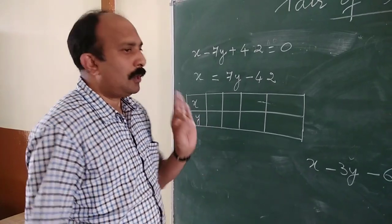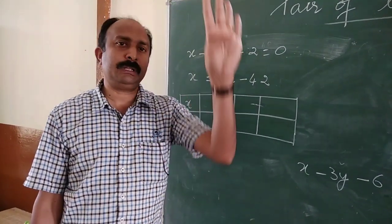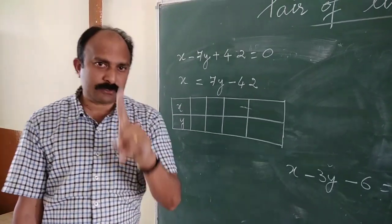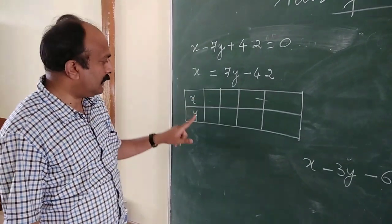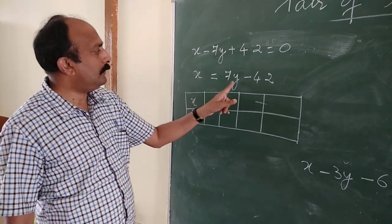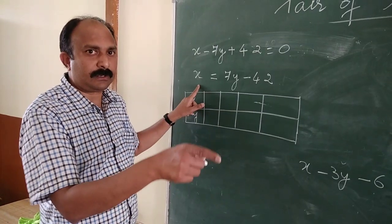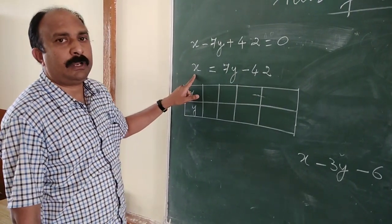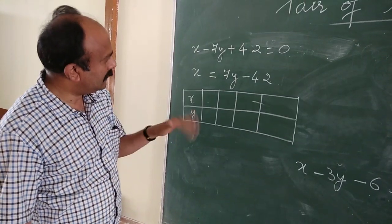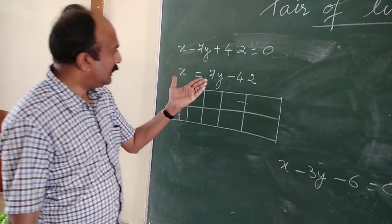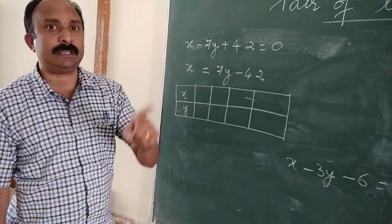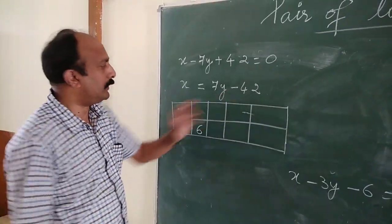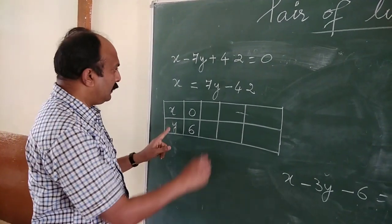To draw the graph, we find sets of solutions. I suggest always finding four sets of solutions. While making the table, always put x above and y below. Since I've rewritten the equation as x equals 7y minus 42, let us put values of y. Taking y equals 6: x equals 42 minus 42 equals 0. Taking y equals 7: x equals 49 minus 42 equals 7.